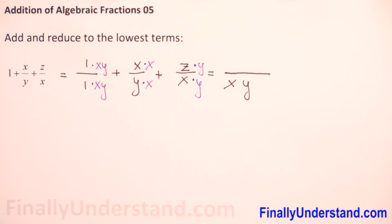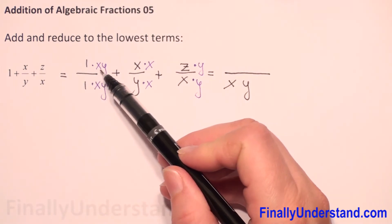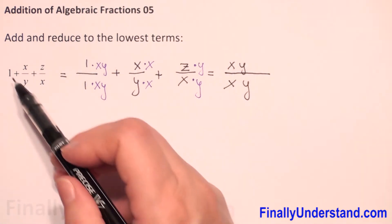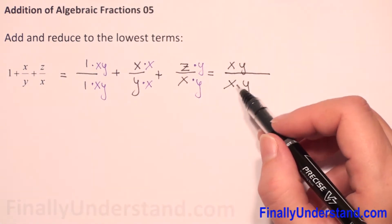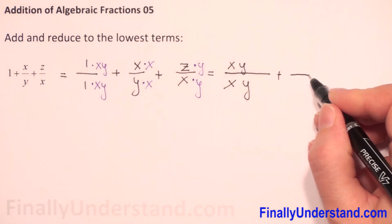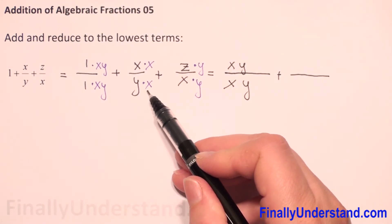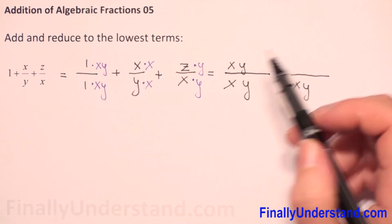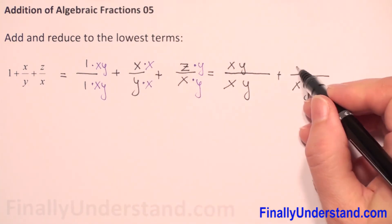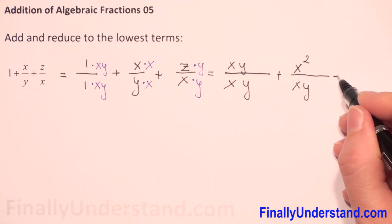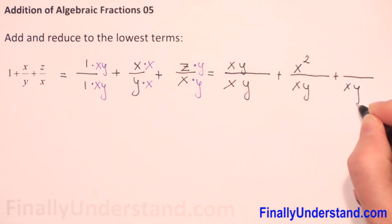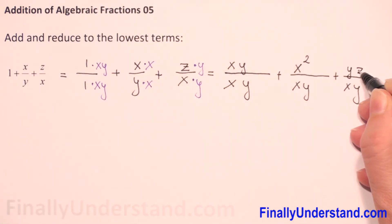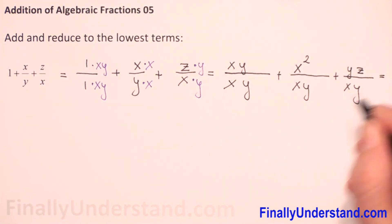Now we can do the multiplications. We have 1 times xy is xy, and 1 times xy is xy — so this first expression is xy over xy, which equals 1. Next we have plus: in the denominator we have y times x, which is xy, putting the variables in alphabetical order. In the numerator, x times x is x squared. We also have x times y in the numerator, and z times y gives yz — putting y first.